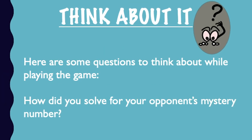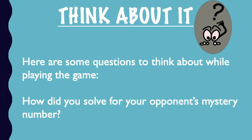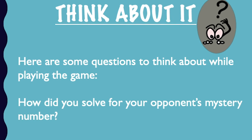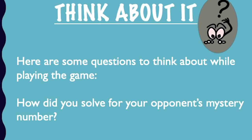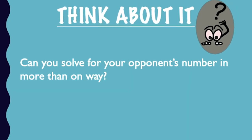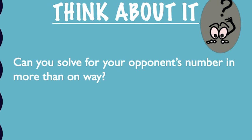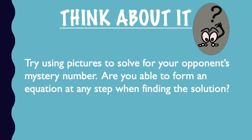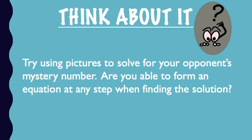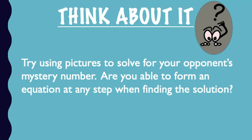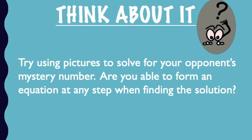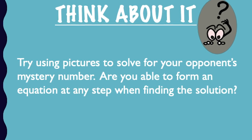Here are some questions to think about while playing the game: How did you solve for your opponent's mystery number? Can you solve for your opponent's number more than one way? Try using pictures to solve for your opponent's mystery number. Are you able to form an equation at any step when finding the solution?